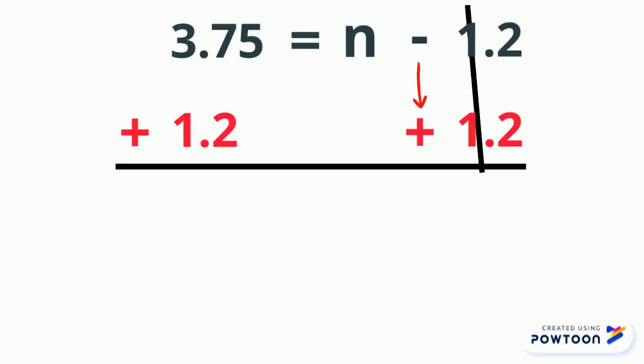Now, when adding decimals, we must make sure to line up our decimal points before adding. We can add a zero as a placeholder here. Now we can add and we get 4.95 = n.